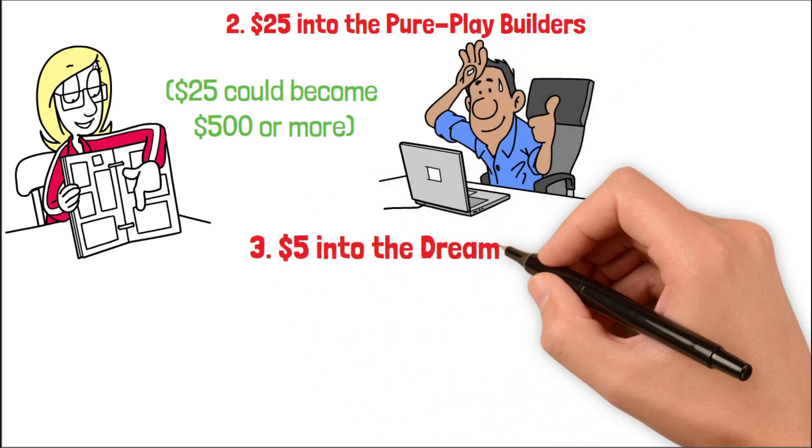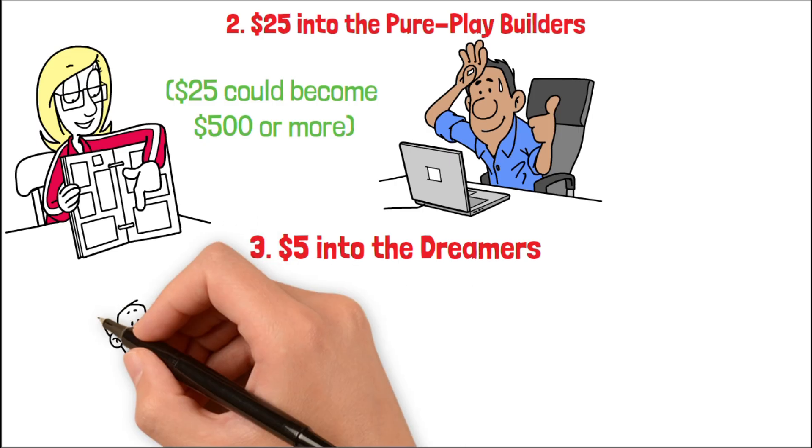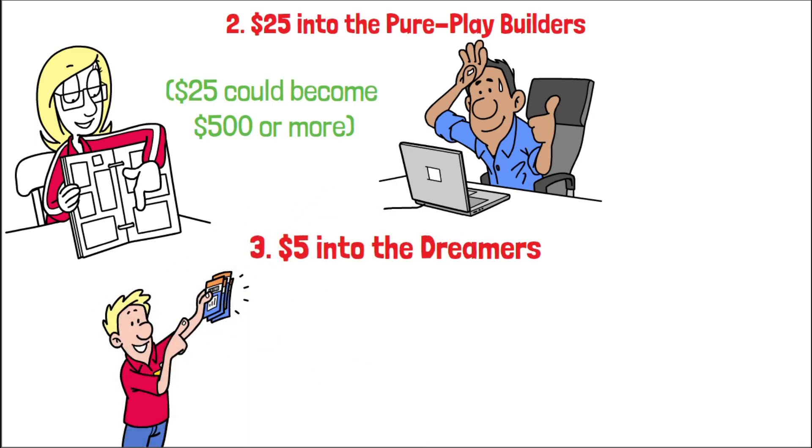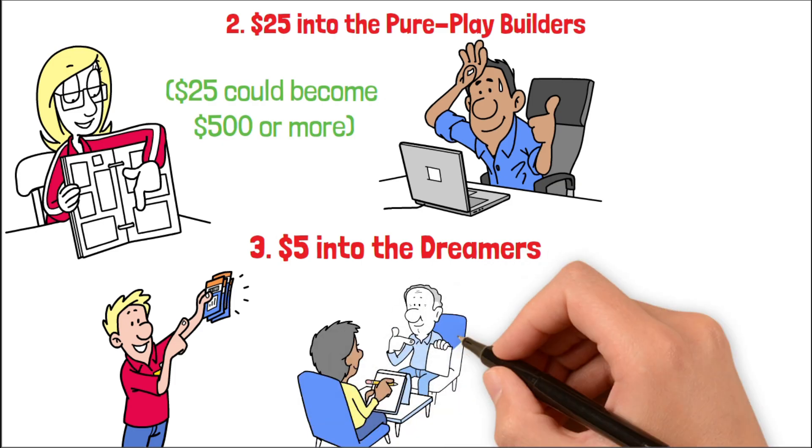$5 into the dreamers. Tiny positions, lottery tickets. This isn't money you depend on. This is money you can afford to lose because the upside is just too good to ignore.